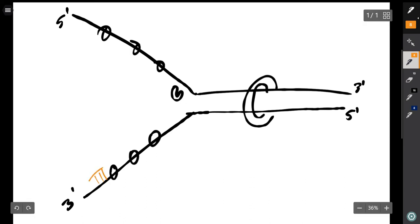RNA primase will come in and add a primer in the 5 prime to 3 prime direction since the bottom strand is in the 3 prime to 5 prime direction.